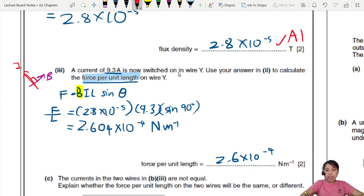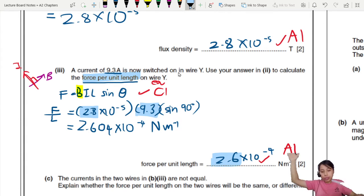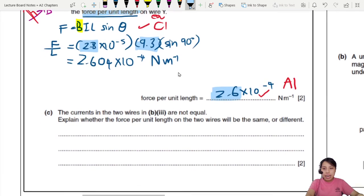Per unit length tells me something that I don't need to know the length, because I can just move the L here. F over L of force per unit length. All that's left is sine. What is this theta? Theta is the angle between the magnetic flux density and the current, which is perpendicular. So we just sine of 90. We use our calculator and calculate, we should get a value of about 2.604 times 10 negative 4 newton per meter.